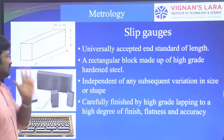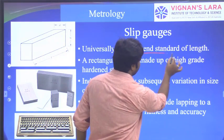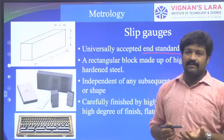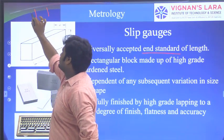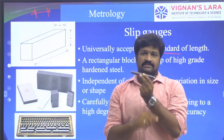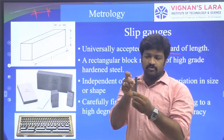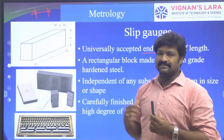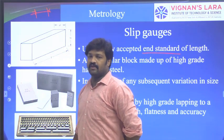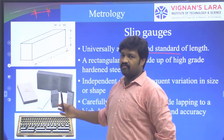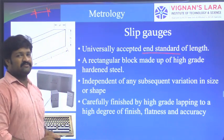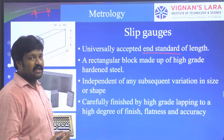Slip gauges are end standards. We already discussed that there are two types of standards: line standards and end standards. If we are taking measurement between two marked lines, that is called a line standard. If we are taking the dimension from one face to another face of a block — from two parallel surfaces — then that comes under end standards. Slip gauges are a universally accepted end standard of length.